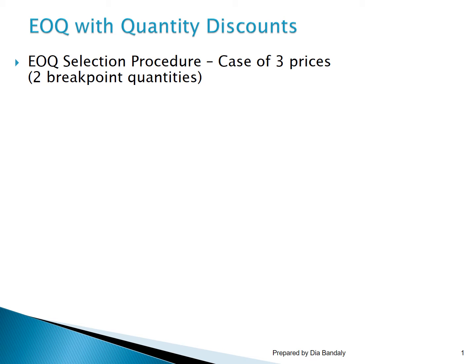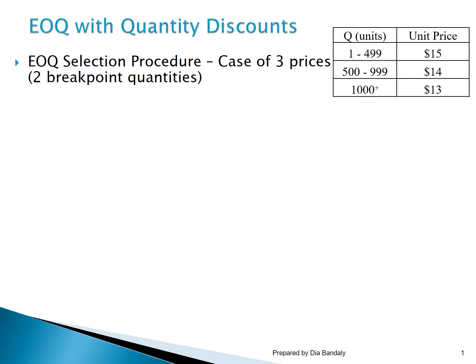Let's discuss every step of this procedure. I'm going to use the previous example about the price structure offered by the supplier to explain every step. This procedure will be the same whenever you face any problem where you have a price discount. We start by finding the EOQ corresponding to the lowest price, which is $13, using the standard EOQ formula: holding cost is Q over 2, plus the ordering cost.